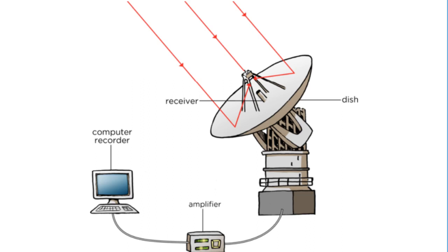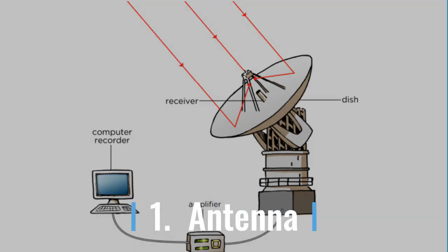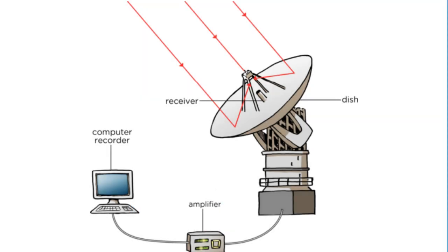A radio telescope is simply a telescope designed to receive radio waves from space. The first basic component is the antenna, used to collect incoming radio waves. Most antennas are parabolic dishes that reflect radio waves to a receiver, in the same way a curved mirror focuses visible light to a point — just like in optical telescopes. Antennas of radio telescopes must be much larger than optical telescopes because the wavelengths of radio waves are so much larger than those of visible light.